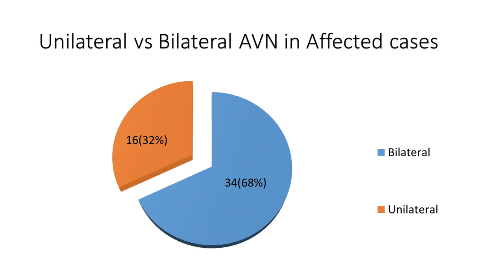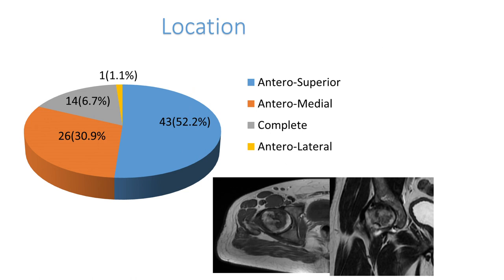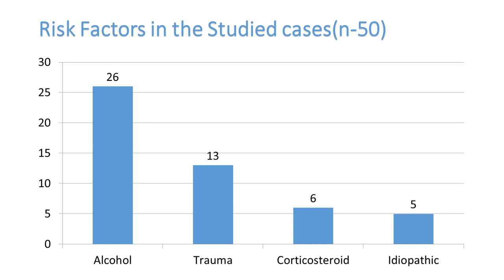In our evaluation, 16 cases are unilateral and 34 cases are bilateral AVN. The most common location involved is anterosuperior, followed by anteromedial, and 14 cases are complete. The most common risk factor identified in this evaluation is alcohol, followed by trauma, followed by corticosteroid use, and the last category is idiopathic.